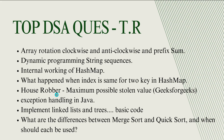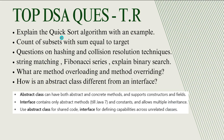House robber problem — maximum possible stolen value — is also on GeeksForGeeks. Exception handling in Java — how does it work? Implementation of linked list and trees — basic code they are asking; prepare pseudo codes for everything. What is the difference between merge sort and quicksort, and when should each be used? Time complexity is also asked — what is the time complexity of merge sort and quicksort? Explain the quicksort algorithm with an example.